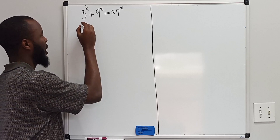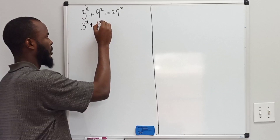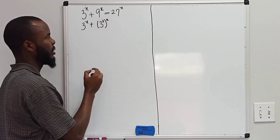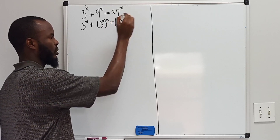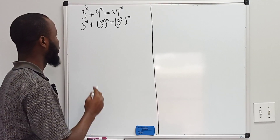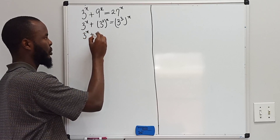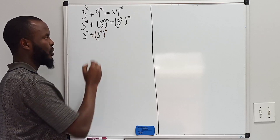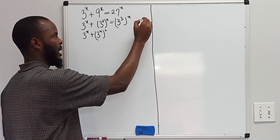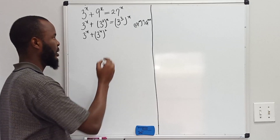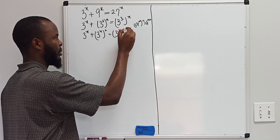Rewriting this given equation, we have 3 to the power of x plus 9, which can be written as 3 to the power of 2x, and also 27 can be written as 3 to the power of 3, all to the power of x. Rewriting this, we can apply the rule of indices that says a to the power of m times n equals a to the power of m times n. So here we have 3 to the power of x, to the power of 3.